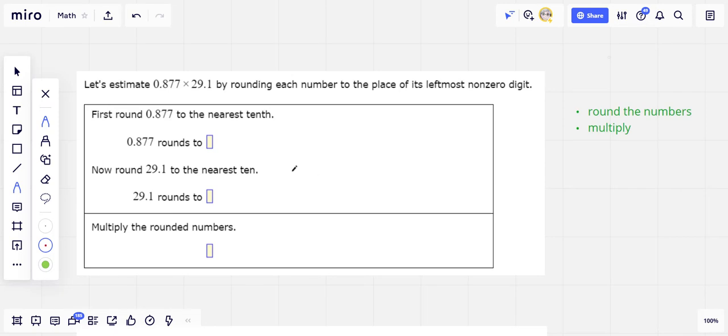In these problems, we're going to use estimation to get an answer that's close enough for a decimal multiplication problem. The estimation is going to make these problems a lot easier than they would have been otherwise.